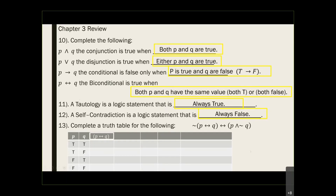Inside the parenthesis is the biconditional (double arrow) statement. The biconditional is true when both values are the same — both true or both false — and false when they have opposite values.